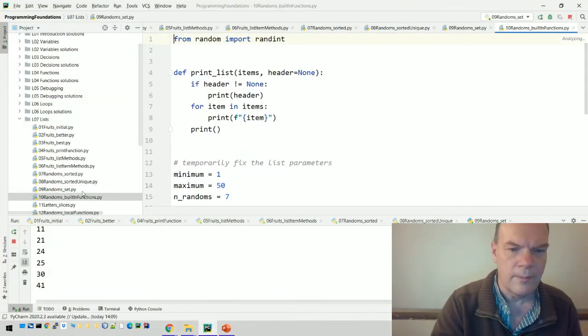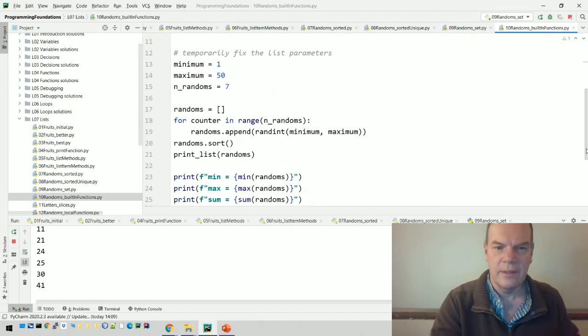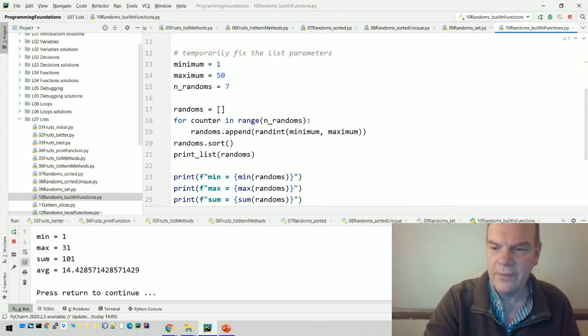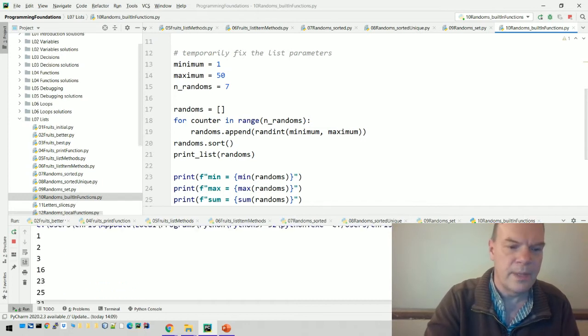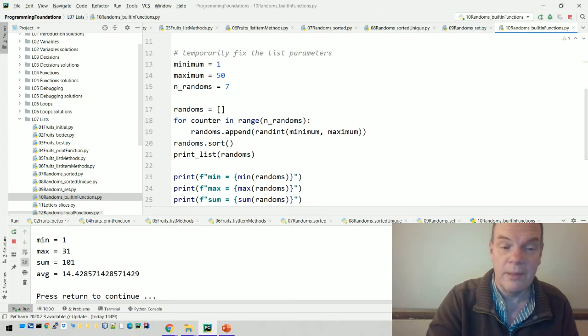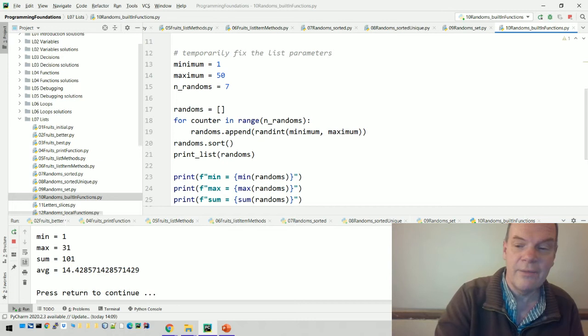Okay, let's just run that one again. I've temporarily fixed the list parameters so I don't have to keep answering questions. If I run that one, control shift 10, there are numbers 1, 2, 3, 16, 23, 25, 31. So the minimum is 1, the max is 31.